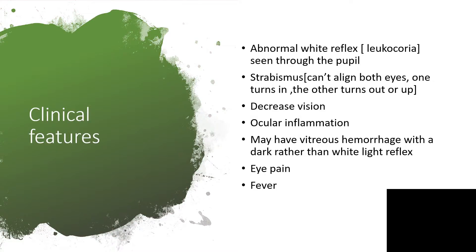The clinical features here will be an abnormal white reflex called leukocoria, seen through the pupil. Strabismus — where both eyes cannot align, one is likely going to turn in and the other will turn out or turn up — and decreased vision when visual acuity is tested. There may also be signs of inflammation, and vitreous hemorrhage with a darker rather than white light reflex.